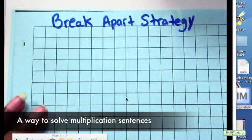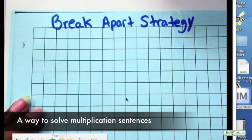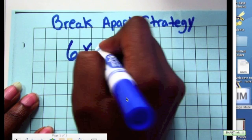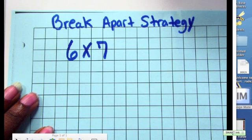We're going to use a method called the break apart strategy to solve for multiplication facts. Let's solve for six times seven using the break apart strategy.